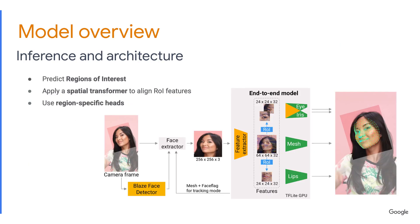Our pipeline consists of the BlazeFace detector, followed by the Attention Mesh itself. The model predicts lips and eye regions of interest, crops them from the common feature map, and predicts landmarks with region-specific submodels.